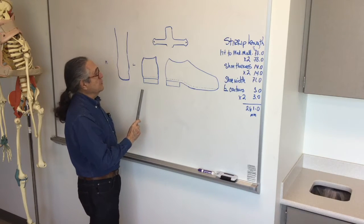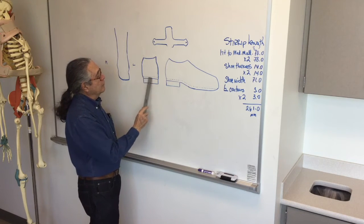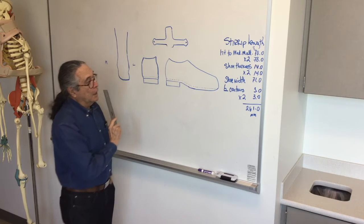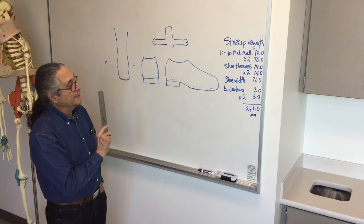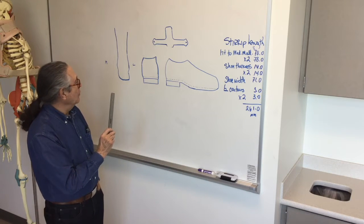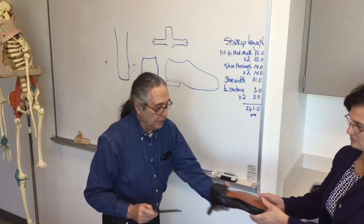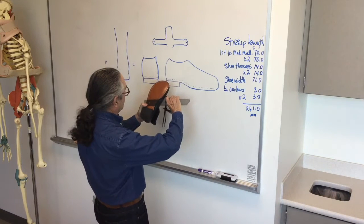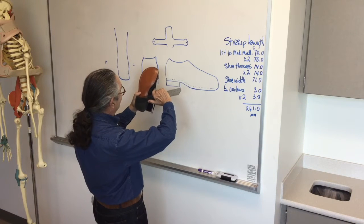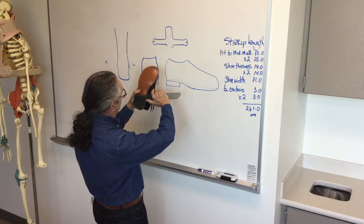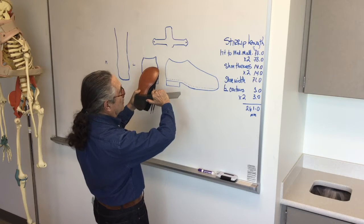The other measurement that we need is the width of the shoe. That measurement is taken at an angle, and we didn't get a measurement for that, so I'll do it here. Like so, because this is the way the stirrup is going to fit. And that is 71 millimeters.